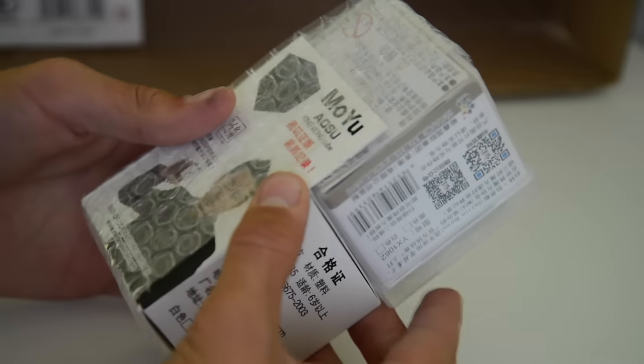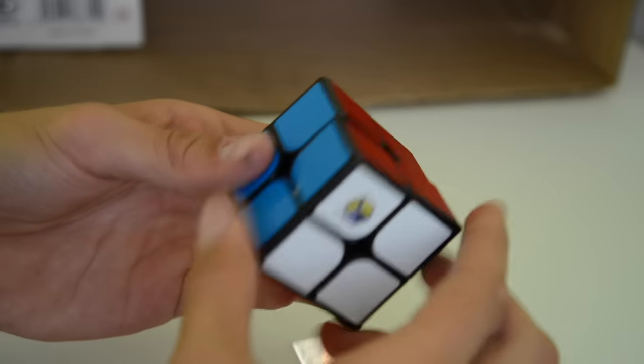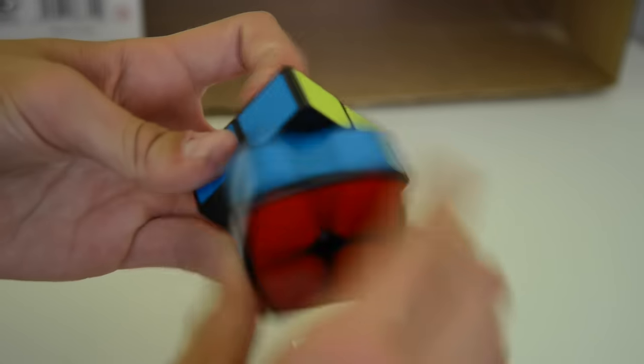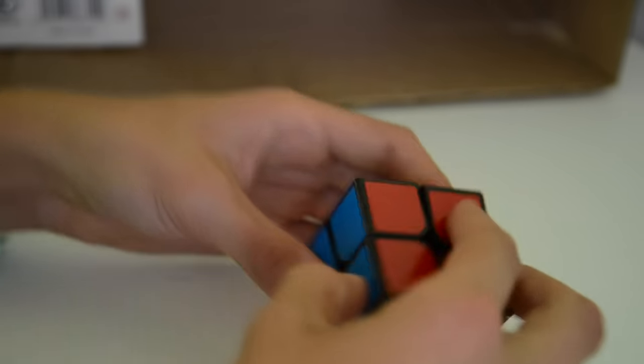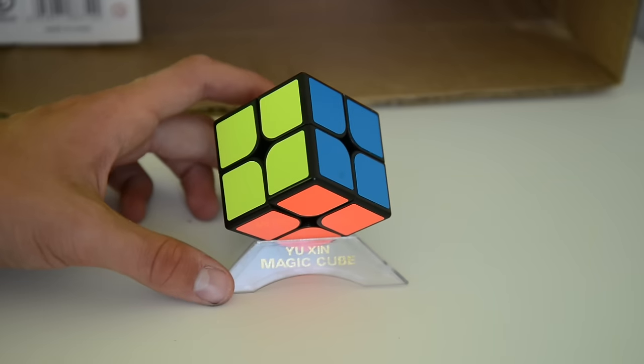Okay. Then here. We have the Moyu Aosu 2x2. Now. Okay. I don't know what is this cube. I think it just, okay. Yeah. It needs a lube. But it's a 2x2. It's a little 2x2. And yeah. This is for my friend as well. And yeah. Nice. Nice.